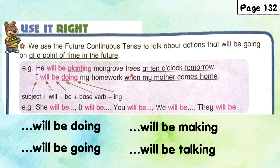For example: he will be planting mangrove trees at 10 o'clock tomorrow. I will be doing my homework when my mother comes home. The underlined part indicates a very specific time — a fixed point in the future — when the action will be happening.